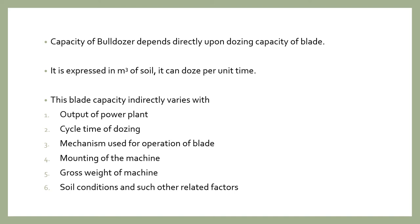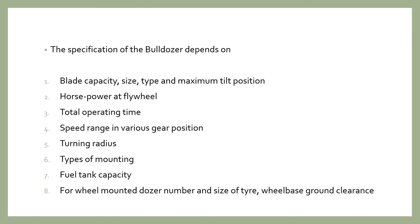So these are the main specifications to consider. Taking these six factors into account, a bulldozer's specifications are drawn as follows: (1) blade capacity, its size, its type, and the maximum tilt position. The blade's capacity, size, and type are very important, and the maximum tilt position of the blade is also a critical specification of the bulldozer.